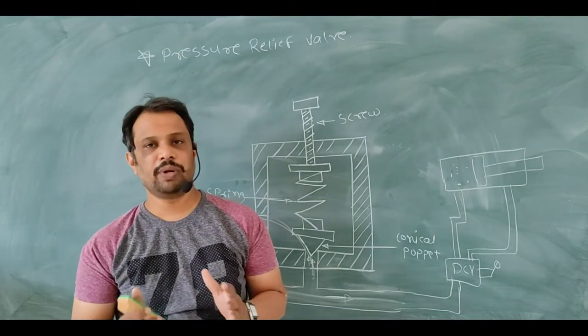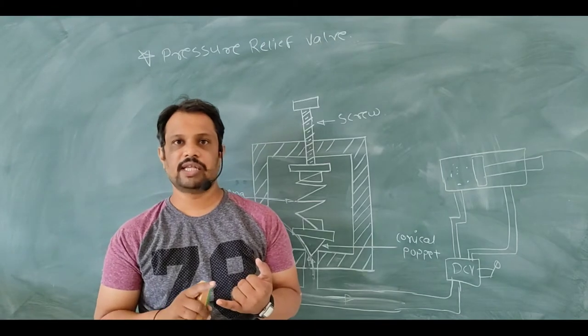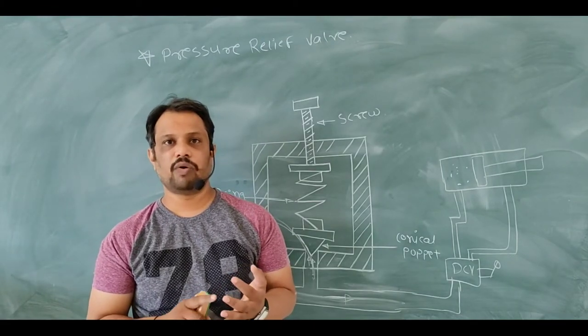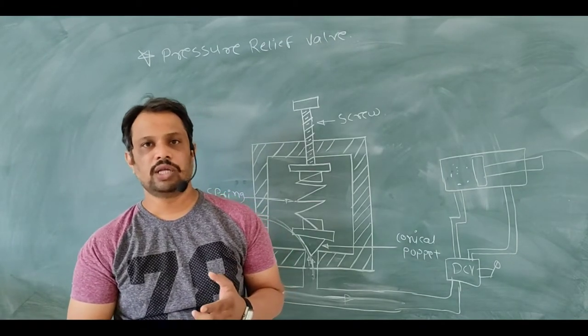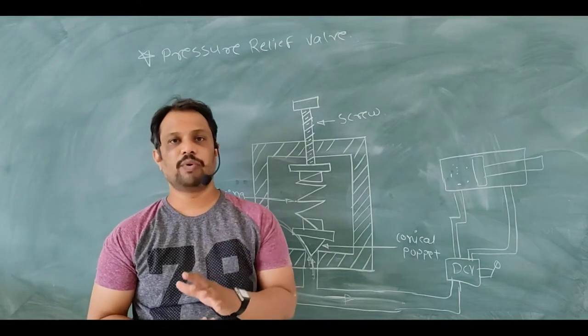In hydraulic system there are so many components, there is a reservoir, there is a pump, after that flow control valve, direction control valve, actuator. There are so many components but PRV is your main component.